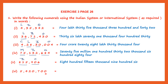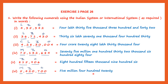Next one. Again we have one, two, three, comma, one, two, three, comma — so this is the international system. The places are ones, tens, hundreds, thousands, ten thousands, hundred thousands, million. Ones, tens, hundreds in the ones period; thousand, ten thousand, hundred thousand in the thousands period; and this will be in the millions period. So let's read it: five million, four hundred and twenty thousand, seven hundred. This is how we write in the Indian or the international systems.